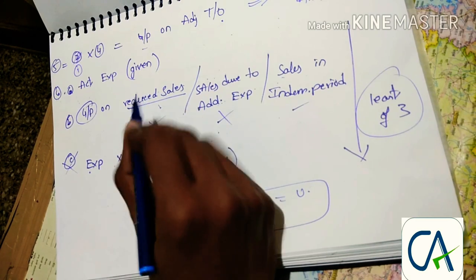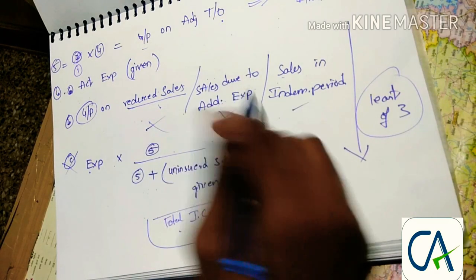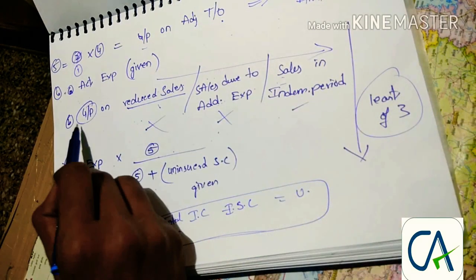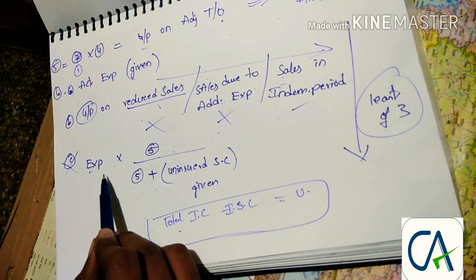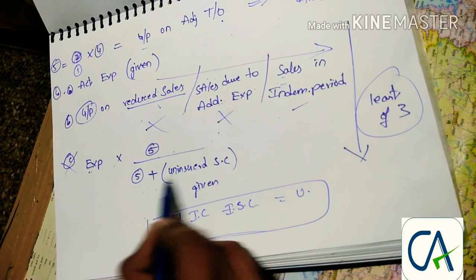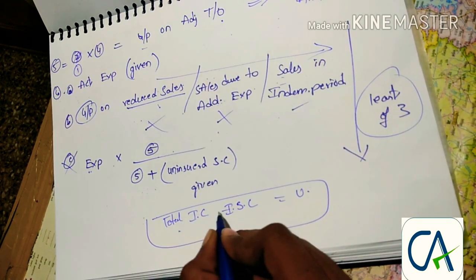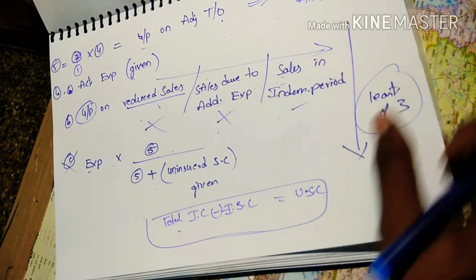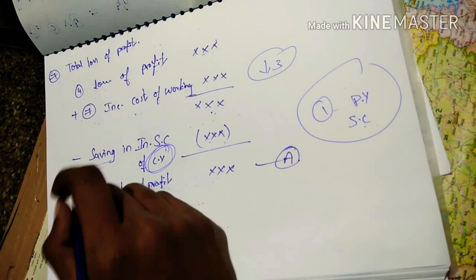In step six, if reduced sales is given in the question, use reduced sales first. If reduced sales is not given, use sales due to additional expenses. If that is also not given, use sales in the indemnity period. In all three cases, calculate gross profit accordingly. The step six formula for increase in cost of working is: actual expenses multiplied by gross profit on adjusted turnover, divided by gross profit on adjusted turnover plus uninsured standing charges. Uninsured standing charges equals total insured charges minus insured standing charges. Take the least of the three results as step six.